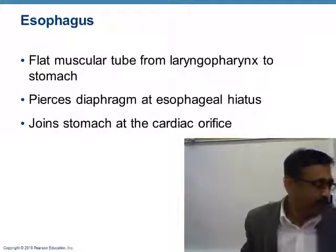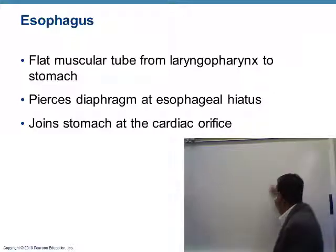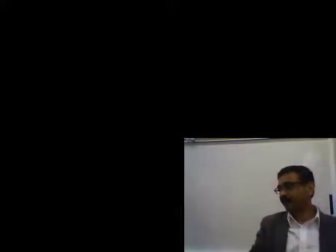The esophagus passes through the diaphragm before it enters into the stomach. The opening in the diaphragm through which the esophagus passes is called the hiatus. The entrance of the esophagus into the stomach is called the cardia orifice.